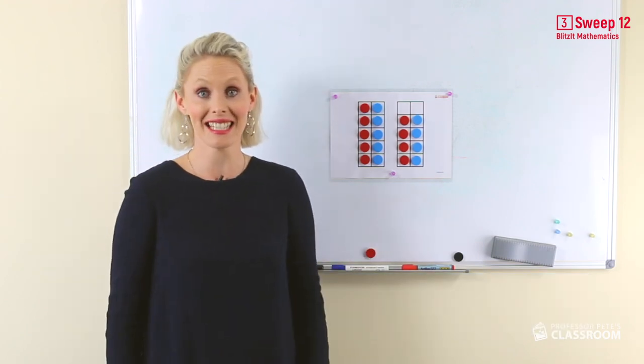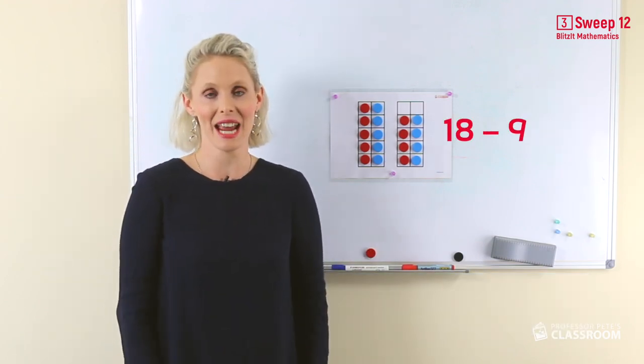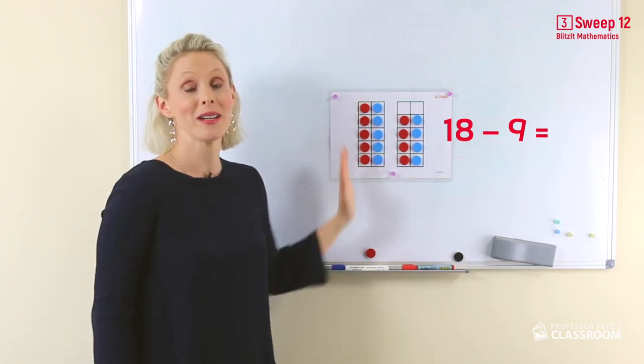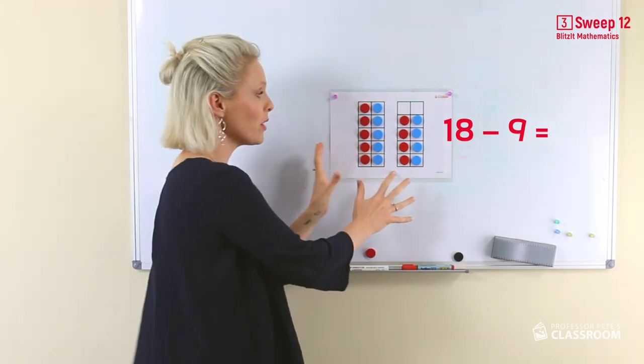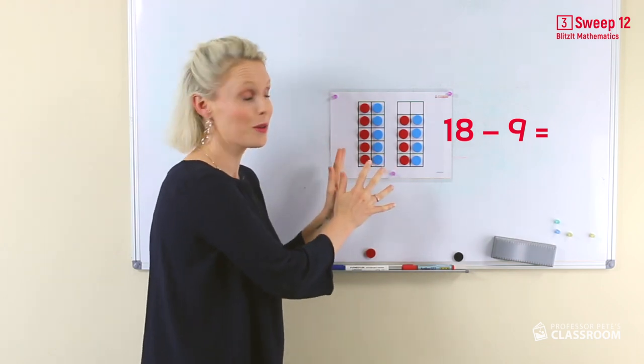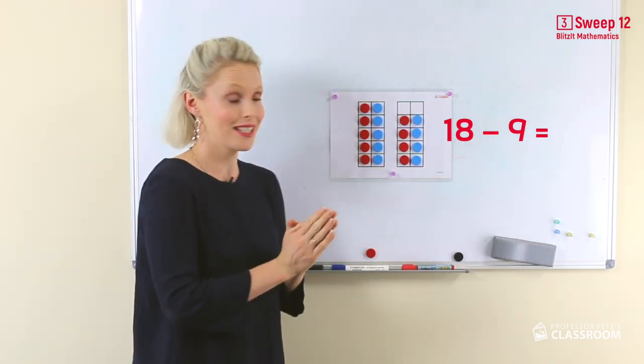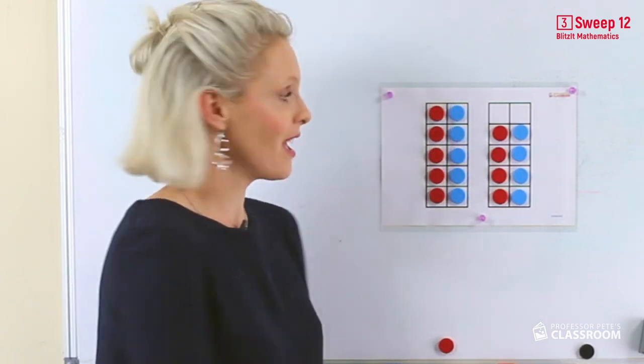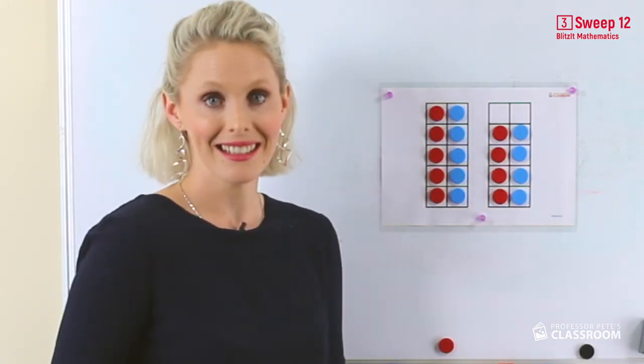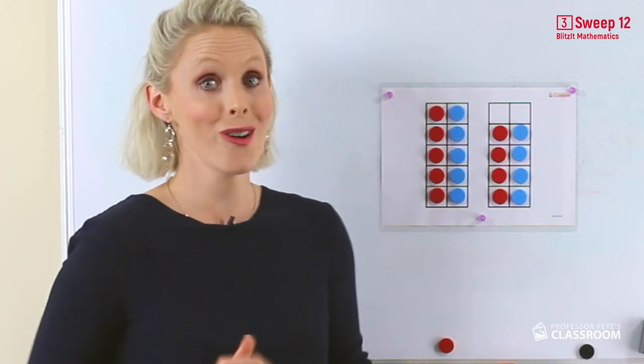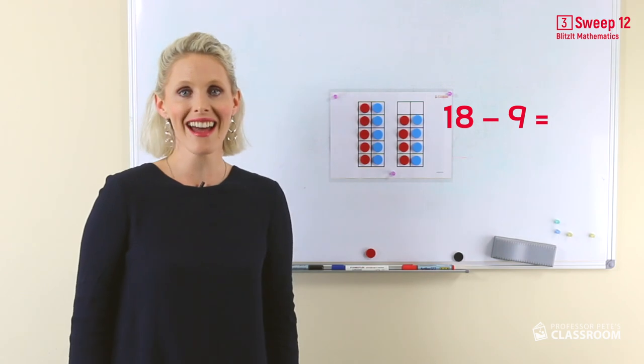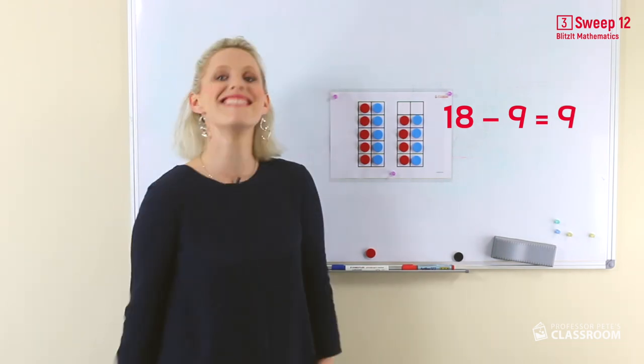Here we have 18 take away 9. We have our 10 frame to help us see it. We need to halve it. We know that half of 10 is 5 and half of 8 is 4. 5 and 4 is 9. So 18 take away 9 equals 9.